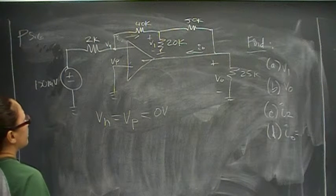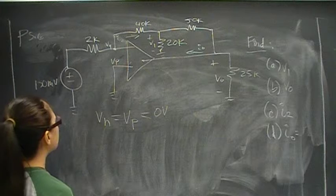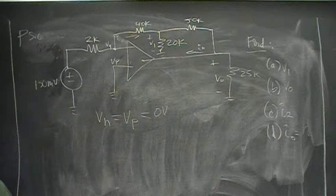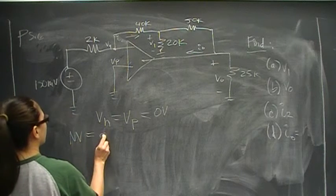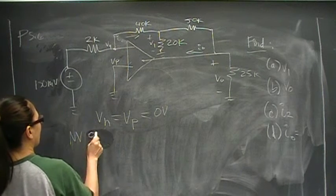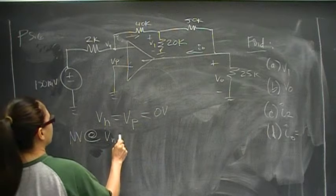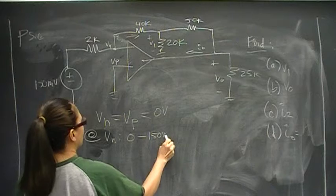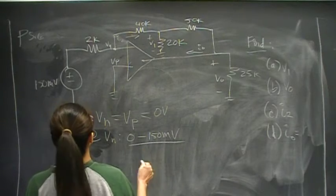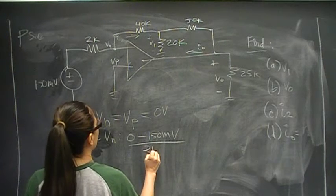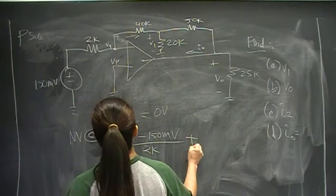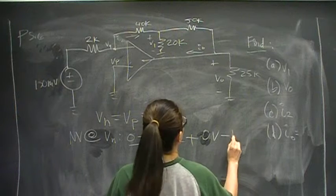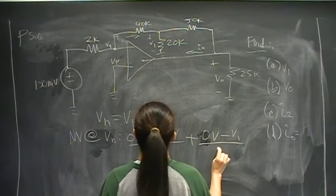So a good place to start is simply start at the node voltage at V, the negative terminal, and see what that gives you. So node voltage at Vn yields zero volts minus 150 millivolts over 2k plus zero volts minus V1 over 40k.